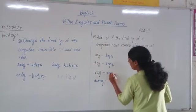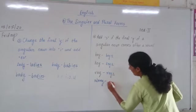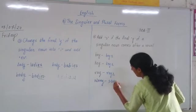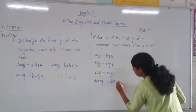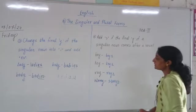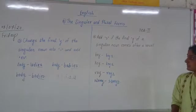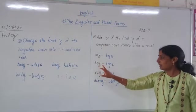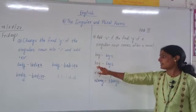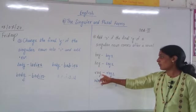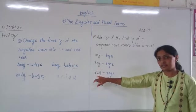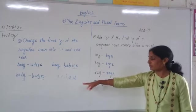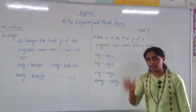Ray → R-A-Y-S → rays. Story → H-T-O-R-E-Y-S → stories. Before 'Y' in 'boy', O is there — that is a vowel. Before 'Y' in 'key', E is there — that is a vowel. Before 'Y' in 'ray', A is there — also a vowel.